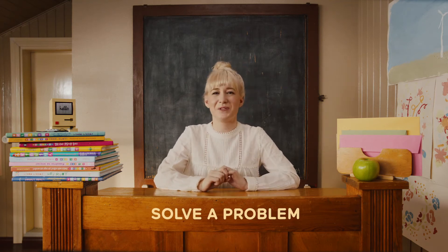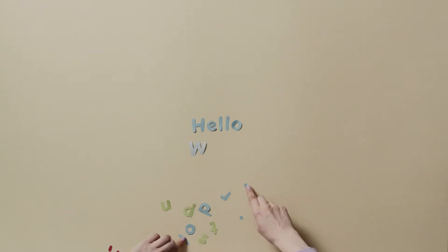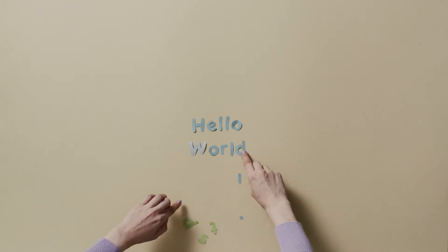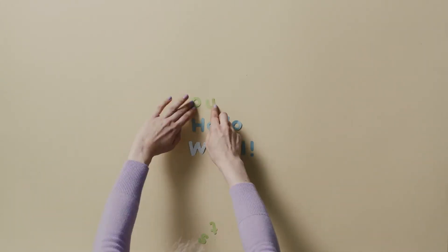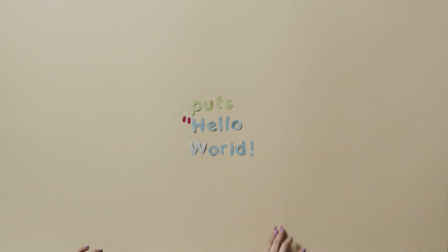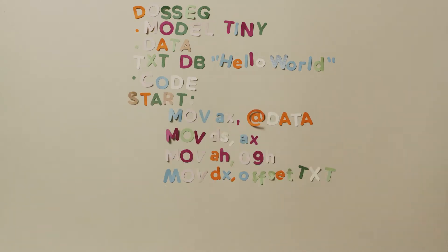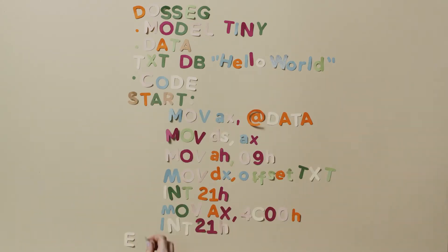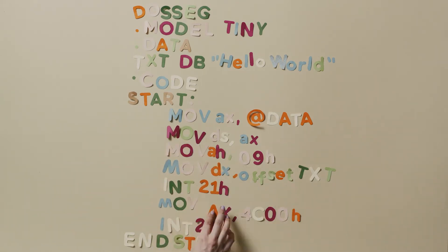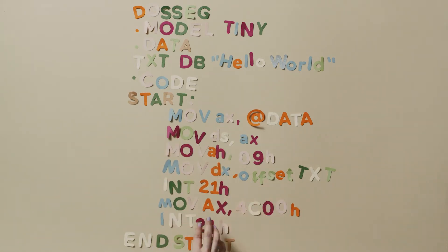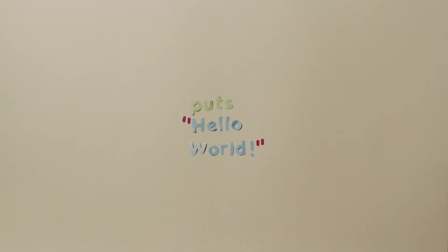So let's look at some code. This here is code in a programming language called Ruby, one of my favorites. And this too is code, programmed with an older language called assembly. Both of these pieces of code actually do the exact same thing — they show the word 'hello world' on the computer screen. But at least in my eyes the Ruby one looks a little bit friendlier.